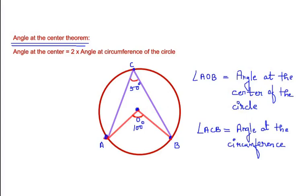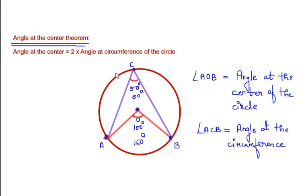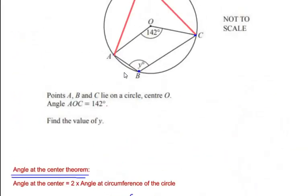According to the theorem, the angle at the center is always two times the angle at the circumference. For example, if at the center we have an angle of 100 degrees then at the circumference we have 50 degrees. If we have an angle of 160 degrees at the center, then at the circumference it's going to be 80 degrees, because the angle at the center is always two times the angle at the circumference.